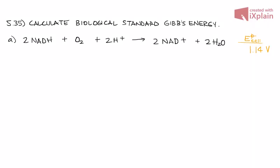Number 35 in Chapter 5 of the Atkins Textbook asks you to calculate biological standard Gibbs energy, or delta G, at biological standard, which is pH equals 7.